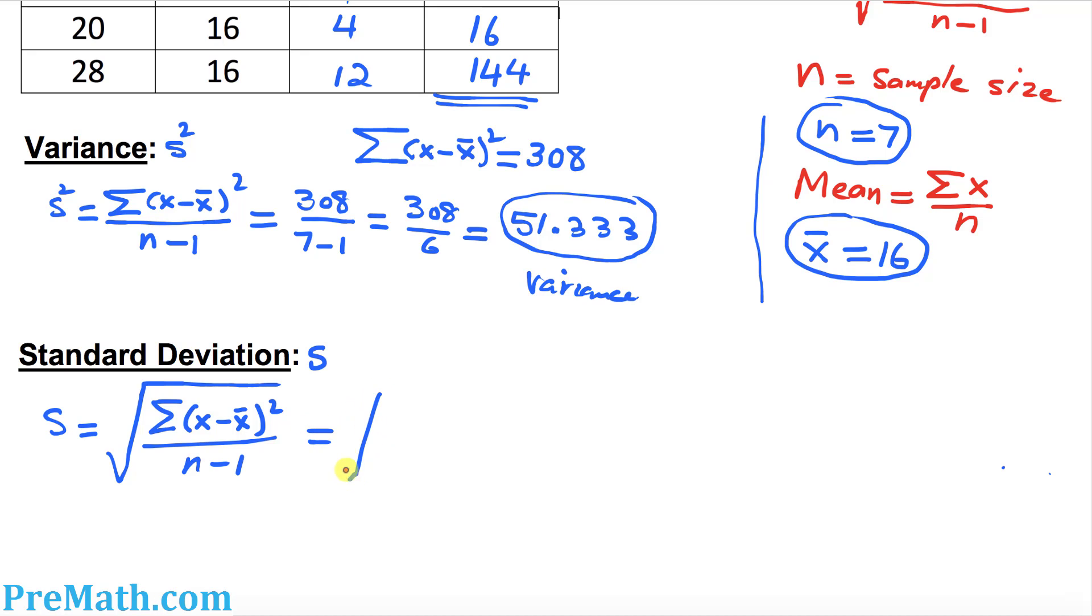So we know that this on the top is 308 divided by 6. That is the square root of 51.333. If you take the square root of this one, that is going to be 7.165. So thus our s turns out to be 7.165. That is our answer.